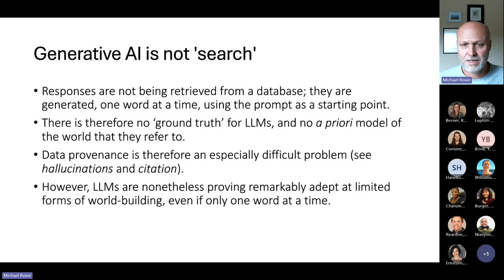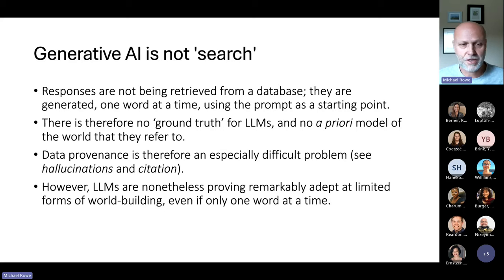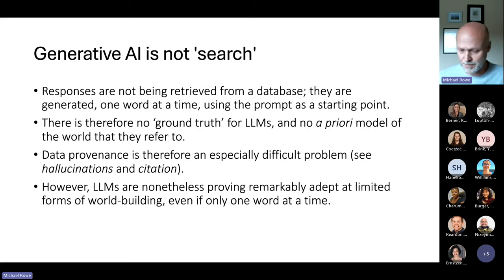Data provenance has until recently been a very difficult problem because language models don't refer back to a ground truth or a source — they literally had no sources, they were making it up. This is changing and becoming less of a problem. Nonetheless, LLMs are really good at limited forms of world building. The context we provide creates a boundary they can use to delimit their responses, and the more context we give them, the more complex those responses turn out to be.